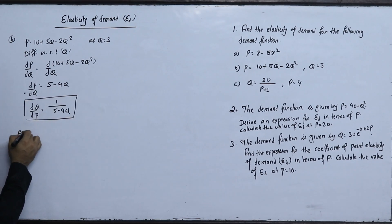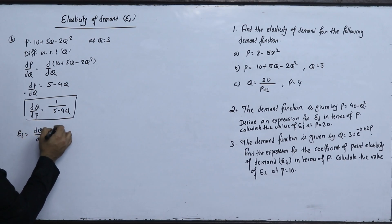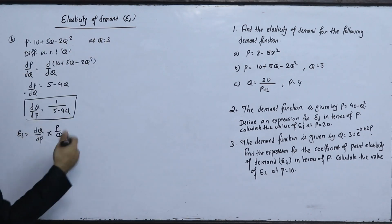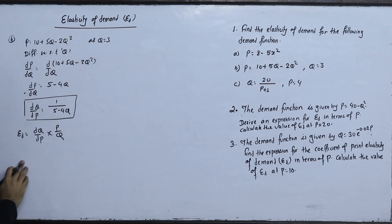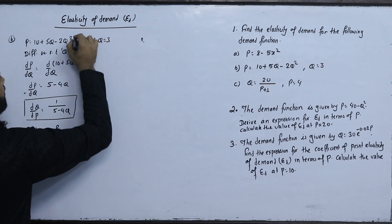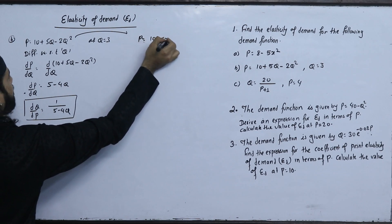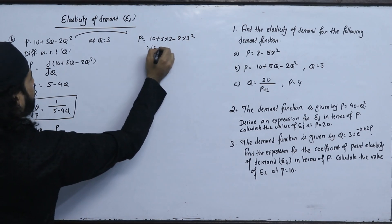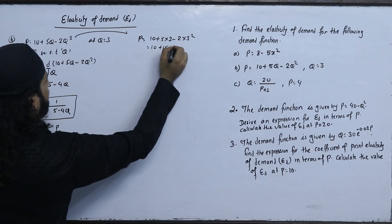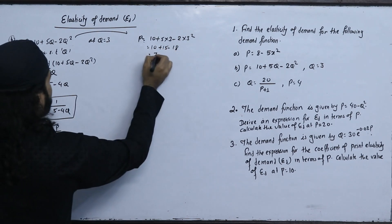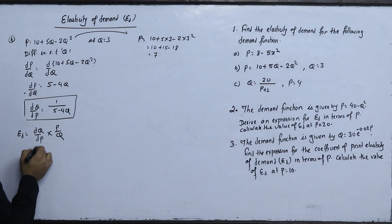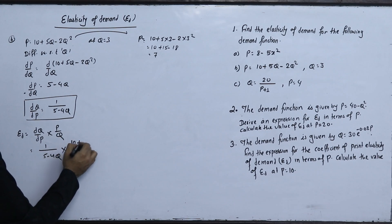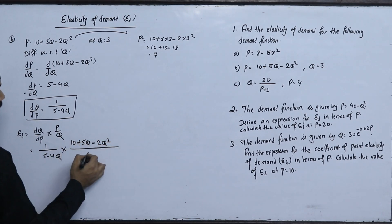The elasticity of demand is dq/dp into p by q. We need to find the value of p when q equals 3. Substituting q equals 3: p equals 10 plus 5 into 3 minus 2 into 3 squared, which gives 10 plus 15 minus 18 equals 7. So dq/dp equals 1 upon 5 minus 4q, and p equals 10 plus 5q minus 2q squared upon q.